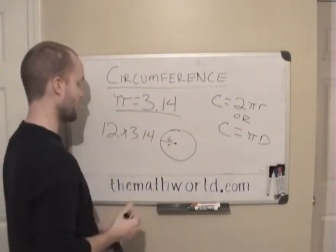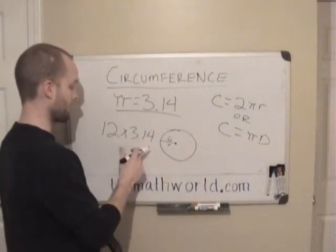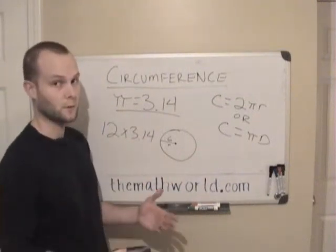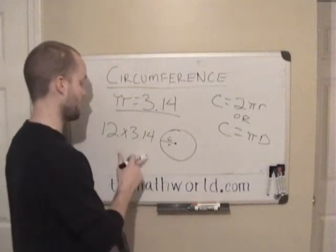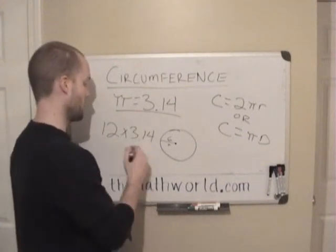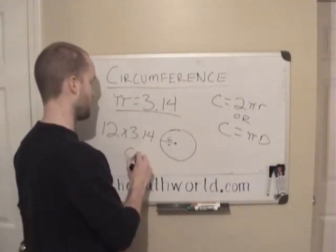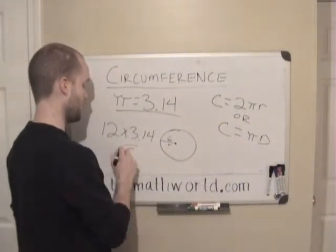So 12 times 3.14, and this will give you your answer. I don't have a calculator on me, but 12 times 3.14, you can use a calculator to multiply it out. This is going to give you the circumference, or just c, depending on how they ask for it.